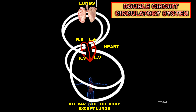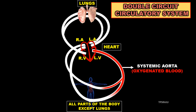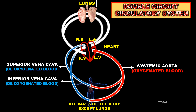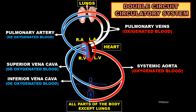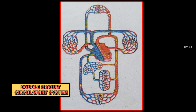Let us observe the flowchart of the double circuit circulatory system. Systemic aorta carries blood from the heart to all parts of the body except lungs. Superior vena cava and inferior vena cava collect this blood and send it into the heart. Then, this blood is carried by the pulmonary artery from the heart to the lungs. Then, this blood is collected by two pulmonary veins and sent into the heart. This is the pathway of blood in human beings.